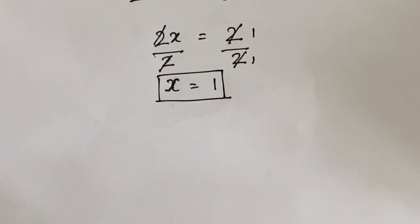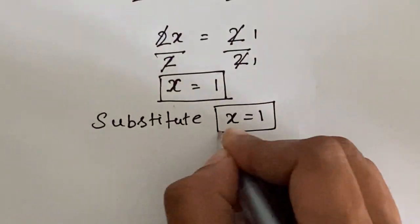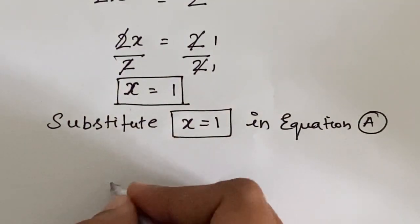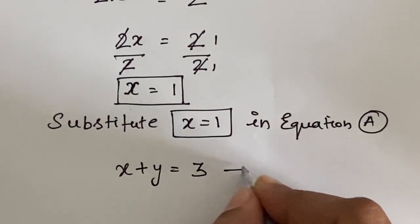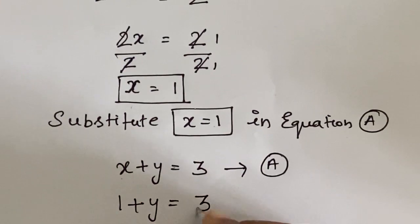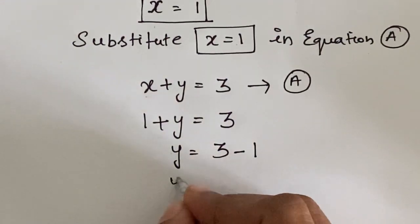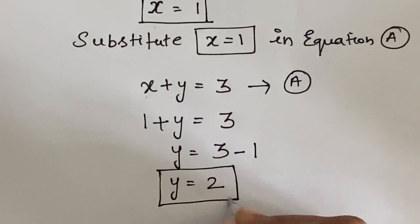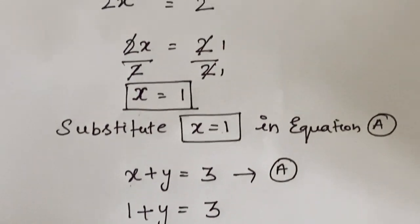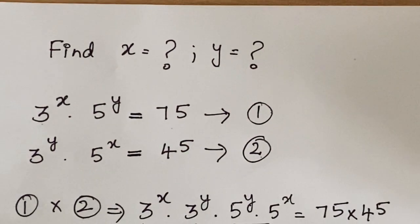Now we substitute the value of x equals 1 into equation A: x plus y equals 3 becomes 1 plus y equals 3, so y equals 3 minus 1, which gives y equals 2. So we found the value of x as 1 and y as 2. If you like this video, please subscribe and thanks for watching.